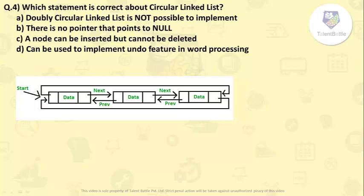Here the first option is doubly circular linked list is not possible to implement, which is incorrect because circular linked list can be singly circular or doubly circular. Second, there is no pointer that points to null. In a circular linked list, the end node points to the head node or the front node. So every node points to some node, making it a circular list. That's why no pointer points to null is correct.